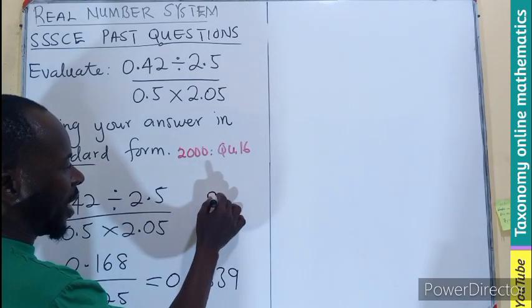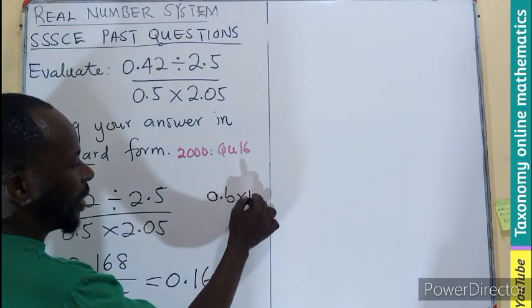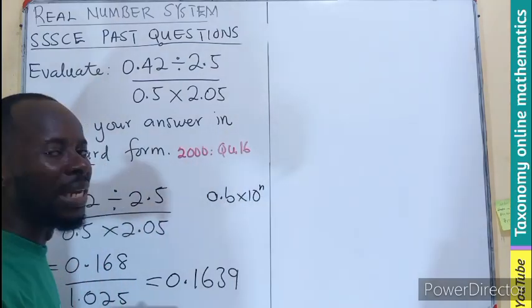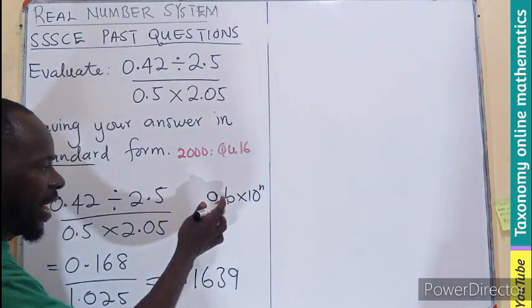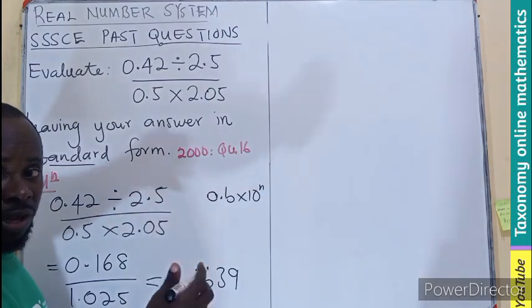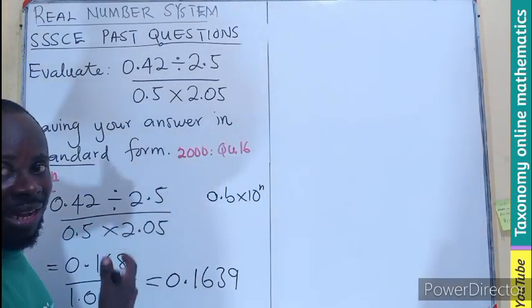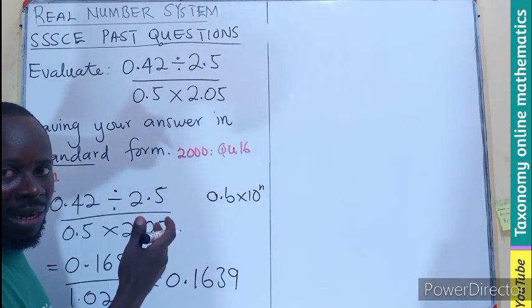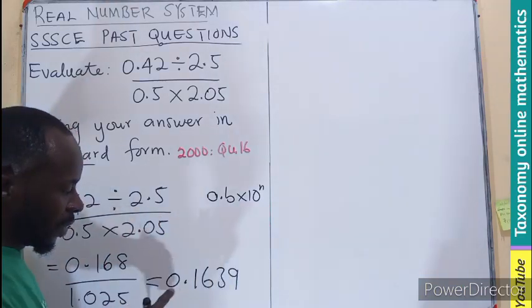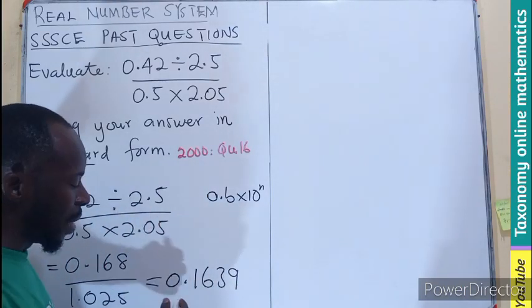The standard form must be A times 10 to the power of an integer. Here, A is the first number ranging between 1 and 9. So we move the point until we get that significant number.